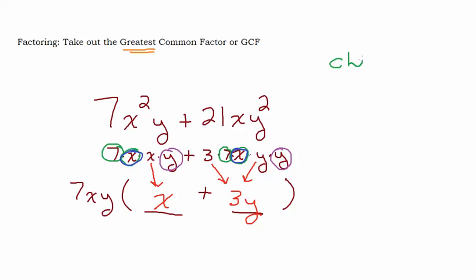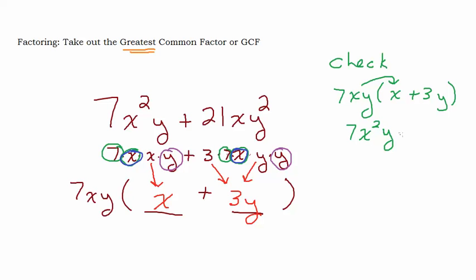Let's check it. We've got 7xy times (x plus 3y). Distributing: 7xy times x is 7x squared y, and 7xy times 3y is 21xy squared — which is the problem we started with. So we know we have it right, taking out the greatest common factor.